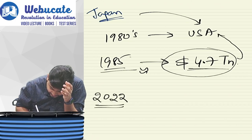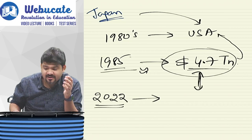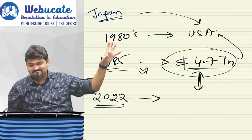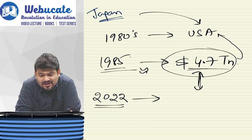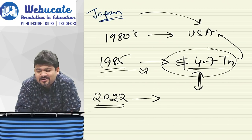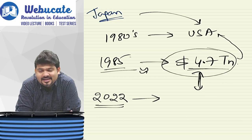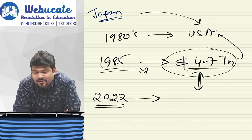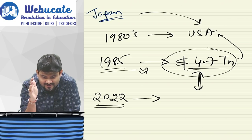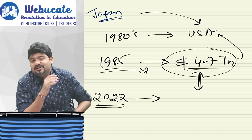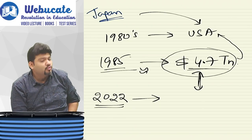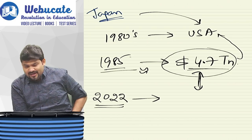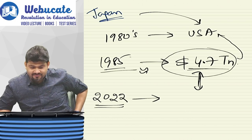In 1985 Japan was on the verge of overcoming the USA. We are now in 2025 and bullet trains, which Japan introduced in the 1960s, still haven't started in India. Now I want an answer from you: given that the Japanese economy was approximately 4.7 trillion dollars in 1985, what do you feel Japan's GDP would be as of today? Give me an approximation.